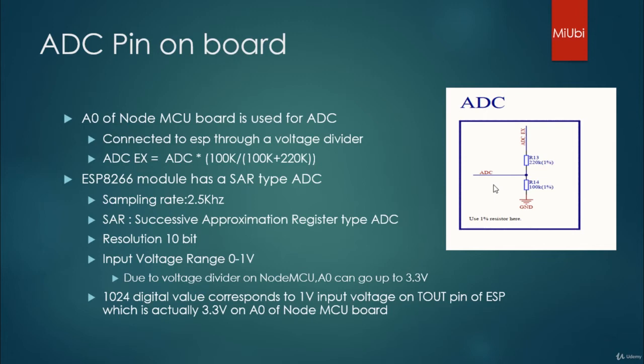Because of this voltage divider, you can increase it to 3.3 volts. Even if you give an external voltage of 3.3 volts, because of the voltage divider it will get divided by 100k by 100k plus 220k. This is a normal voltage divider formula. A fraction of input voltage will be going into the ESP8266 board.